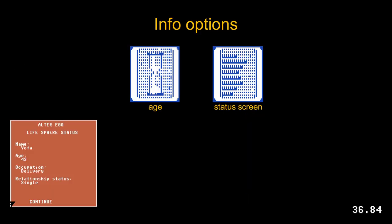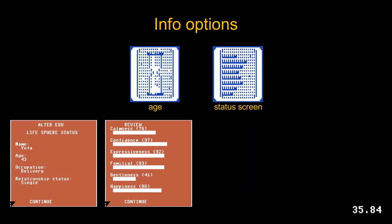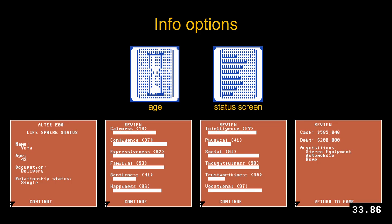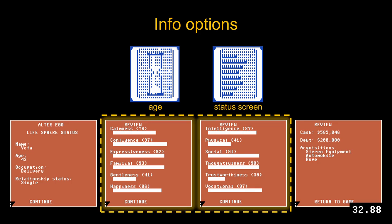You can display your character's current age and other specifics, including their 12 character attributes. These values are determined by a series of personality questions at the beginning of the game, and then later shaped by experiences and choices.